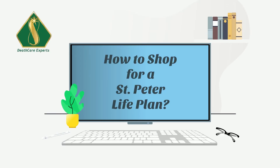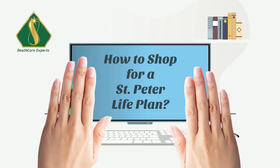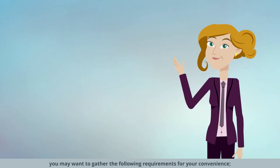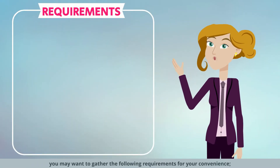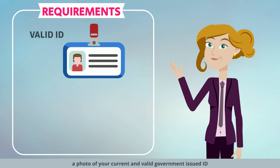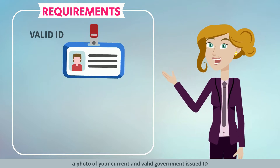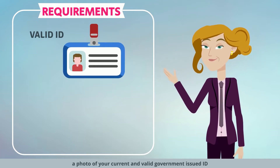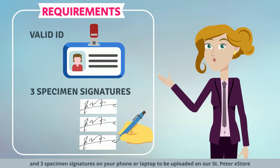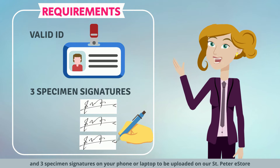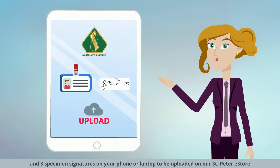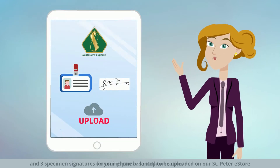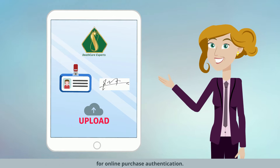How to shop for a St. Peter Life Plan. Before we start, you may want to gather the following requirements for your convenience: a photo of your current and valid government-issued ID, and three specimen signatures on your phone or laptop to be uploaded on our St. Peter eStore for online purchase authentication.